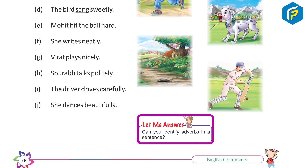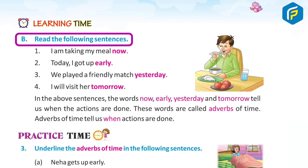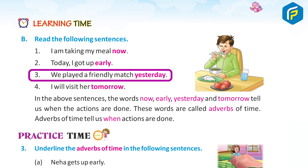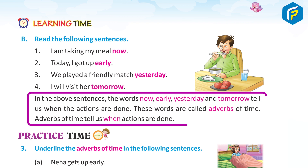Can you identify verbs in a sentence? Learning Time B. Read the following sentences. 1. I am taking my meal now. 2. Today I got up early. 3. We played a friendly match yesterday. 4. I will visit her tomorrow. In the above sentences, the words now, early, yesterday and tomorrow tell us when the actions are done. These words are called adverbs of time. Adverbs of time tell us when actions are done.